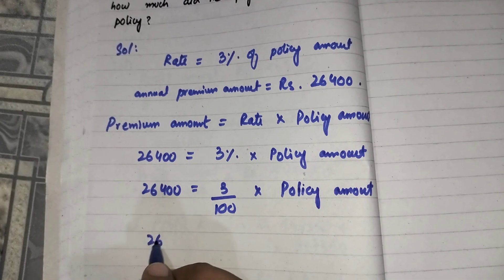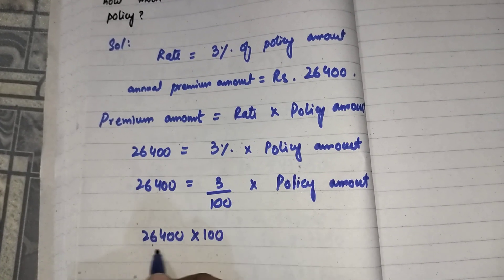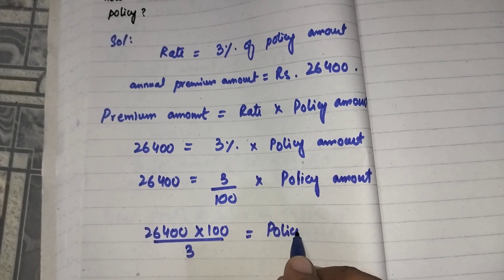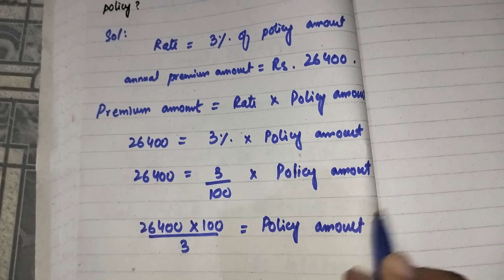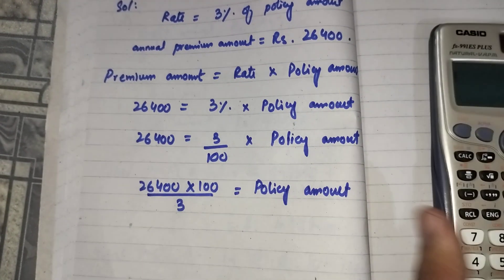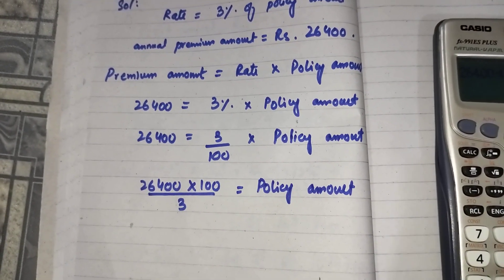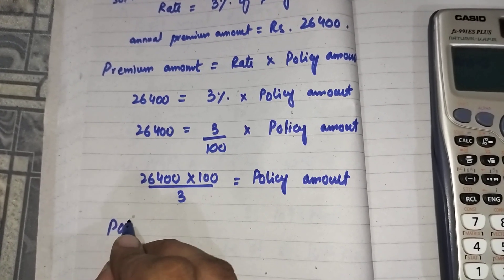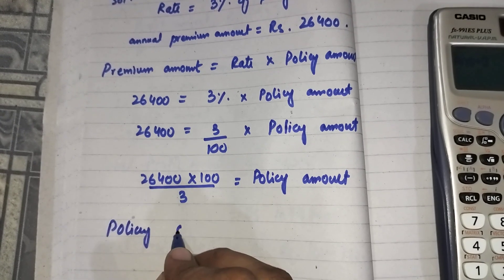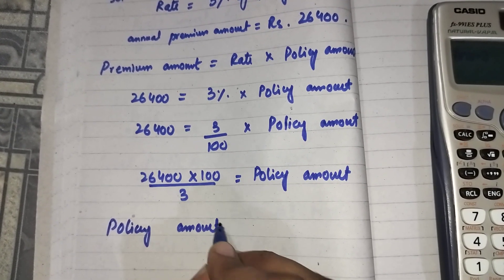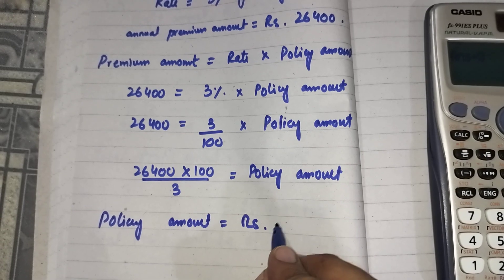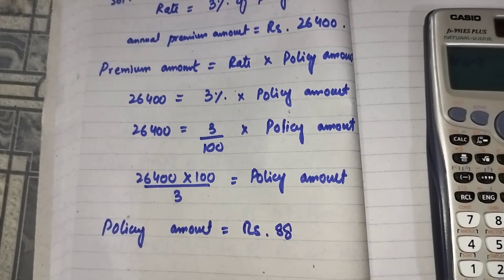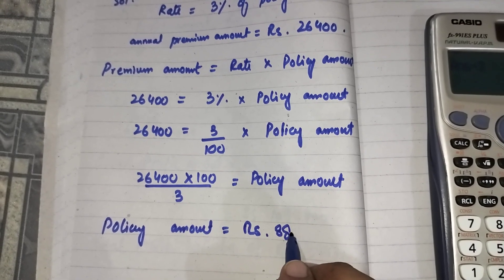So 26,400 multiplied by 100 and divided by three will equal the policy amount. Calculating this: 26,400 × 100 ÷ 3, the policy amount will be Rs. 8,80,000.